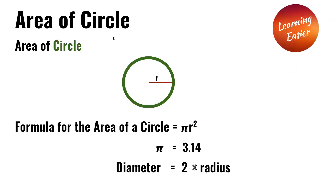Area of a circle. The formula to find the area of a circle is pi r to the power of 2. Pi is equal to 3.14, and the diameter is 2 times the radius. R is also equal to radius.